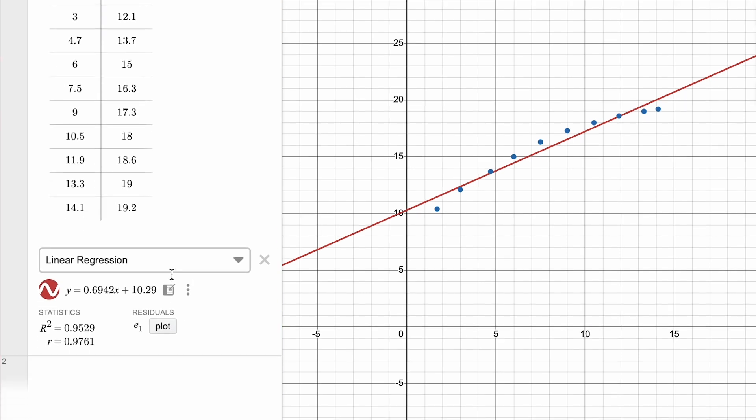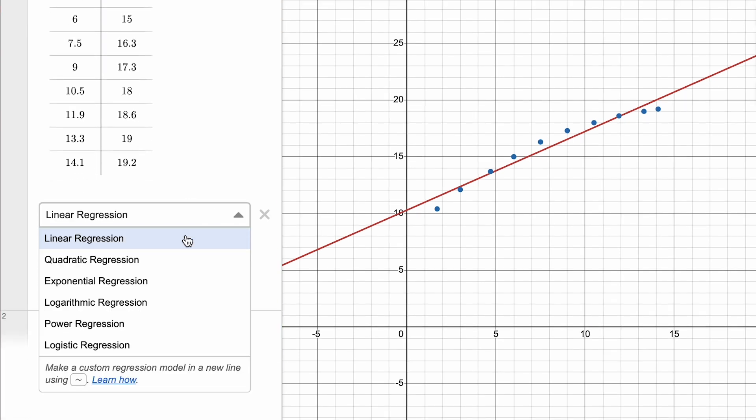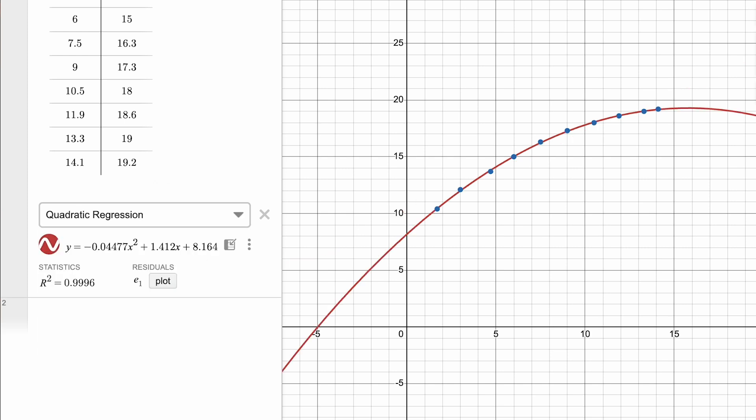Want to try something different? Click the Regression Model drop down menu to explore other regression models. Let's try using a quadratic regression model, which you'll notice gives a better fit for the data, both visually and as indicated by an R-squared value closer to 1 in the statistics section.